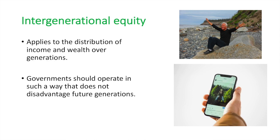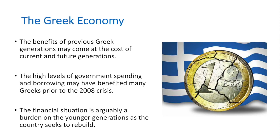Let's look at a case where intergenerational equity may not be equitable — consider the case of the Greek economy. The benefits of previous Greek generations may have come at the cost of current and future generations. The high levels of government spending and borrowing that took place after Greece joined the Eurozone in 2001 may have benefited many Greeks prior to the 2008 crisis.